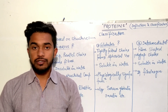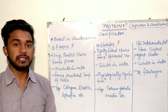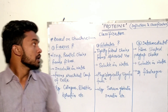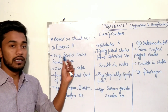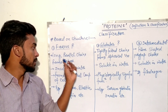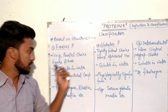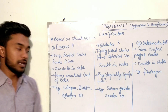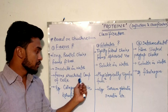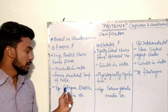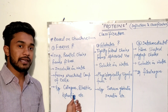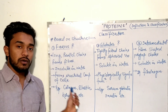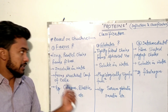Based on structure, we have three types of proteins. Fibrous proteins are long, parallel polypeptide chains forming fibers. They are insoluble in water and form structural components of the cell. Examples of fibrous proteins are collagen, elastin, and keratin.